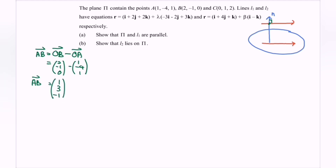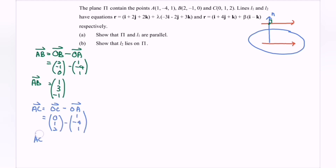Continuing with vector AC, which equals OC minus OA. OC is (0, 1, 2) and OA is (1, -4, 1). Simplifying, vector AC equals (-1, 5, 1).